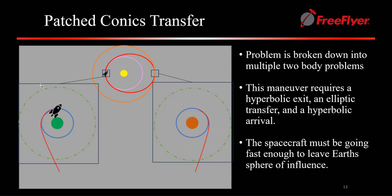After calculating our phase angle, we can have the spacecraft leave the sphere of influence of Earth using a hyperbolic exit. Then, using our elliptical transfer, we can watch as the spacecraft moves from that initial orbit around the Sun into the final orbit around the Sun.